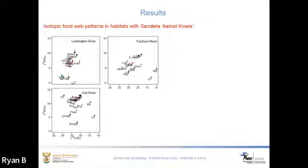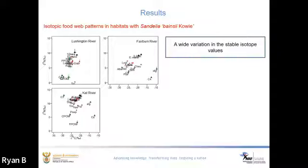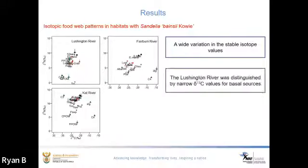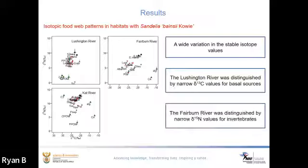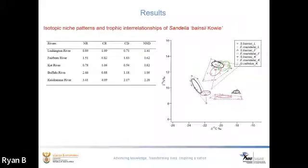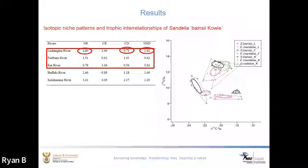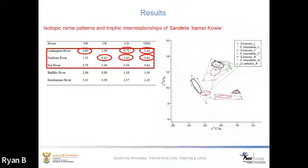The results showed that within the Great Fish River system, the three sites where Sandelia benzae kowei was captured exhibited wide variation in stable isotope values for different trophic groups. The Lushington River was distinguished by narrow carbon values for basal sources, and the Fairbain River by narrow nitrogen values for invertebrates. The Lushington River was also distinguished by a high nitrogen range, indicating high trophic diversity with corresponding low trophic redundancy. A large nitrogen range amongst consumers suggests more trophic levels and thus greater trophic diversity. The Fairbain River community was distinguished by high carbon range, indicating a wide range of basal sources. Consequently, the lineage's isotopic niche was largest in the Lushington River and smallest in the Fairbain River.